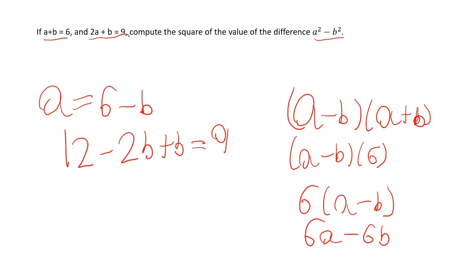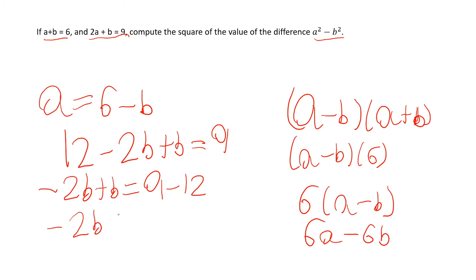Let's take 12 over to the other side: negative 2b plus b equals 9 minus 12. That gives us negative b equals negative 3. Negative 2b plus b is negative b. So negative b equals negative 3, which tells us b equals 3.